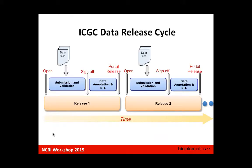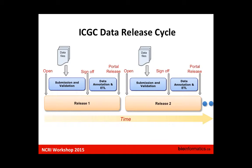The screen's cut off a little bit, but here it shows the opening of the submission. Basically it goes by cycles — every year there are three to four different submission sessions. Members of the ICGC submit data to the DCC through a submission system. It starts with a few projects submitting data, being verified and validated on the server side. Errors are reported, they correct the errors, and when the data is high-quality, we sign off. Then data processing, annotation, and ETL start. We close the submission and release the data portal for cancer researchers to browse and search data of interest.